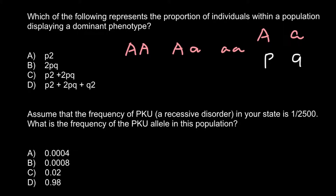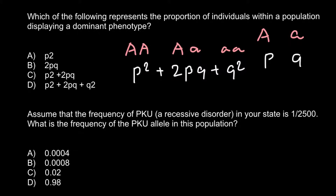Now we can arrange all this information into the formula. For the homozygous dominant genotype we have P squared, because when we multiply A by A we get A squared, but since we use P instead of A in the formula, we get P squared. Then plus two PQ, plus Q squared.